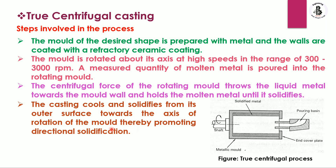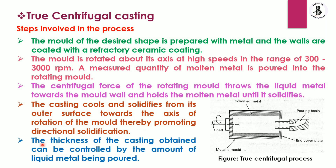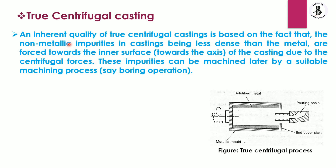By controlling the directional solidification process, casting defects are reduced. The thickness of the casting can be controlled by the amount of liquid metal poured. An inherent quality of true centrifugal casting is that non-metallic impurities, being less dense than the metal, are forced towards the inner surface due to centrifugal force. These impurities can be removed later by a suitable machining process — generally a boring operation is used for making smooth inner surfaces.